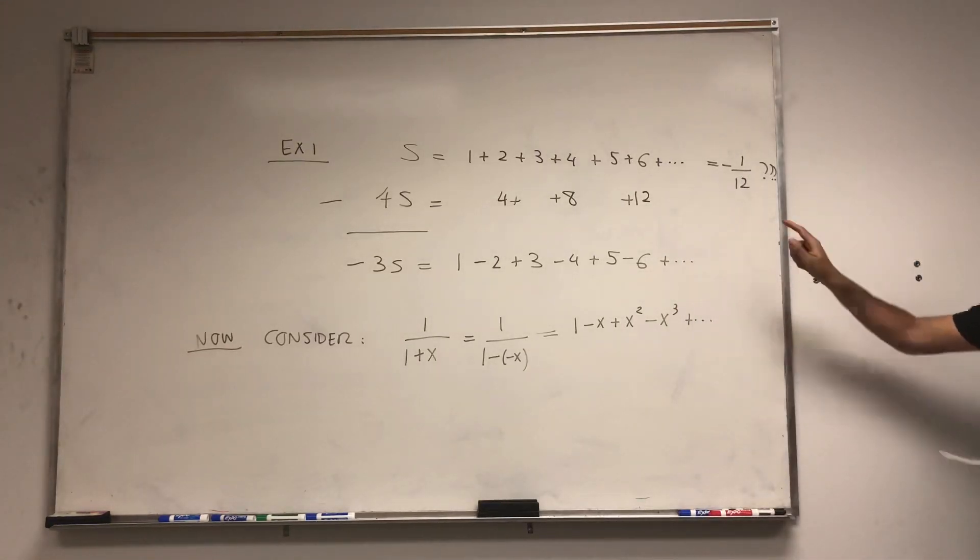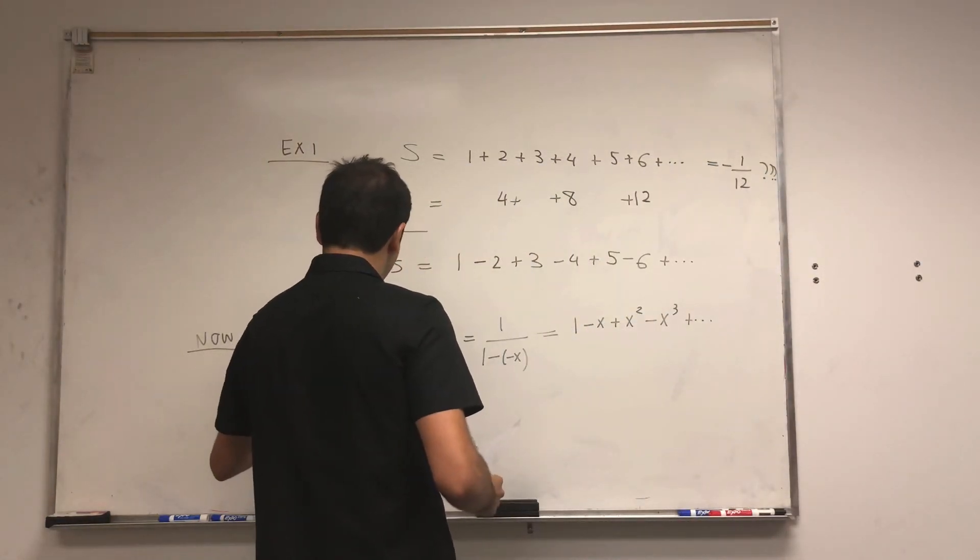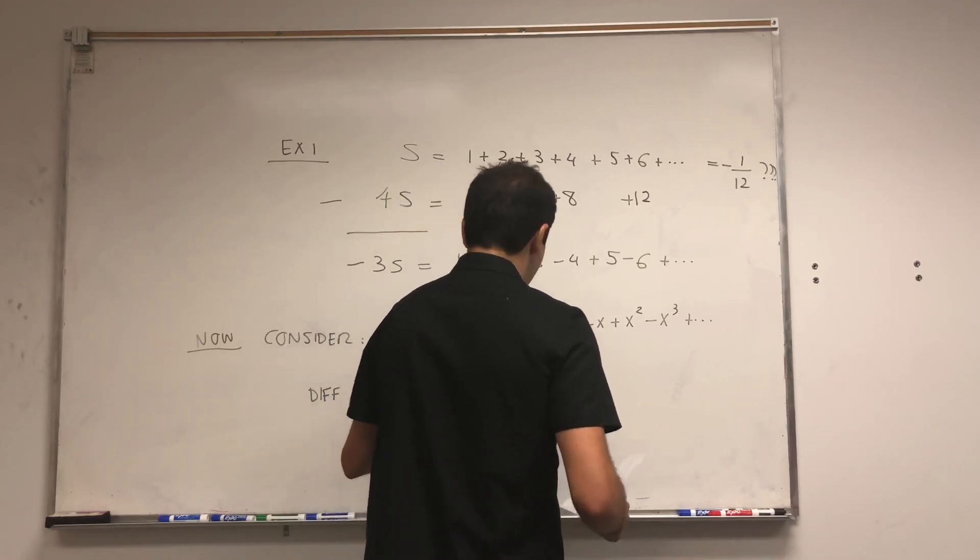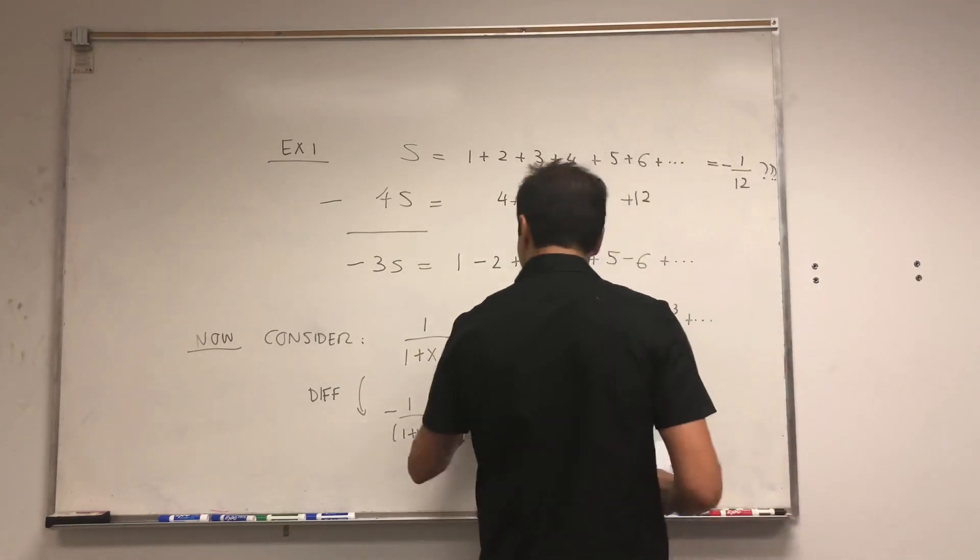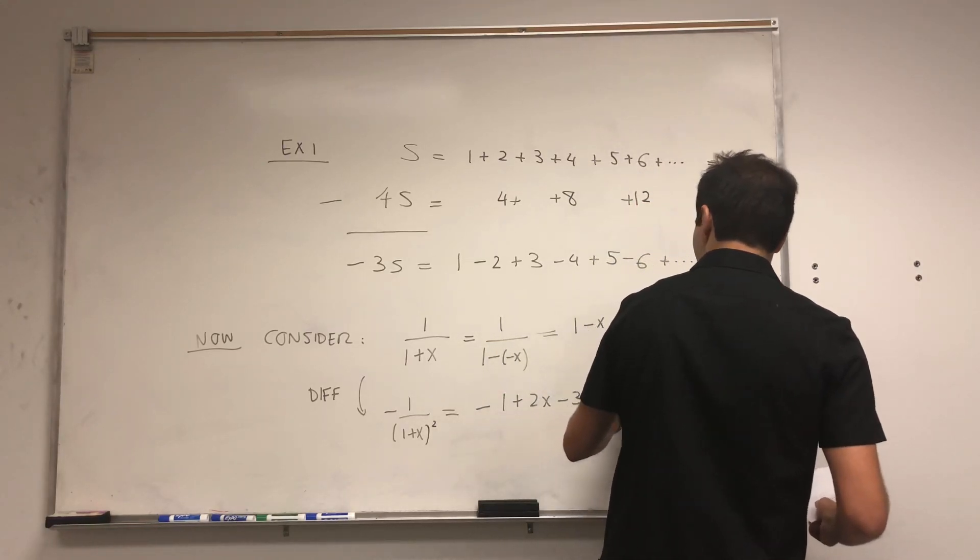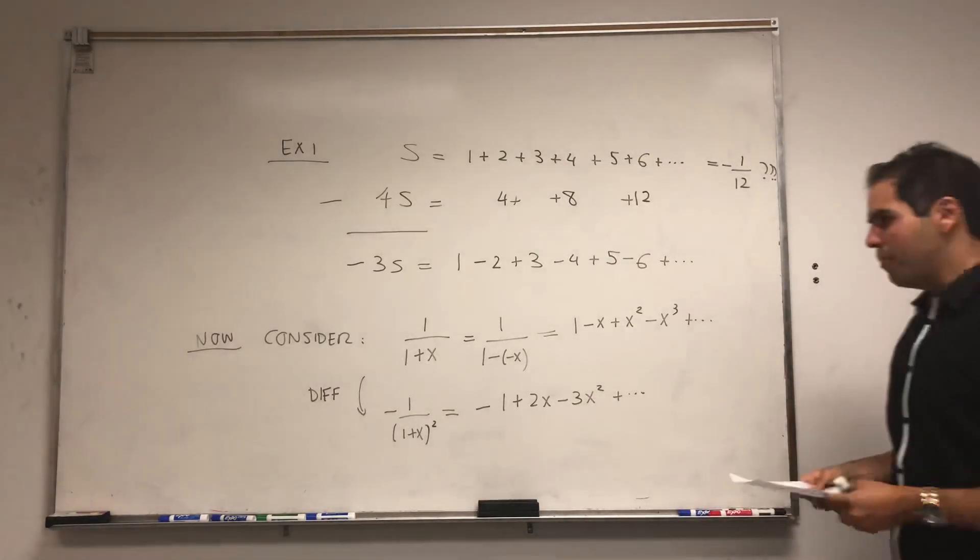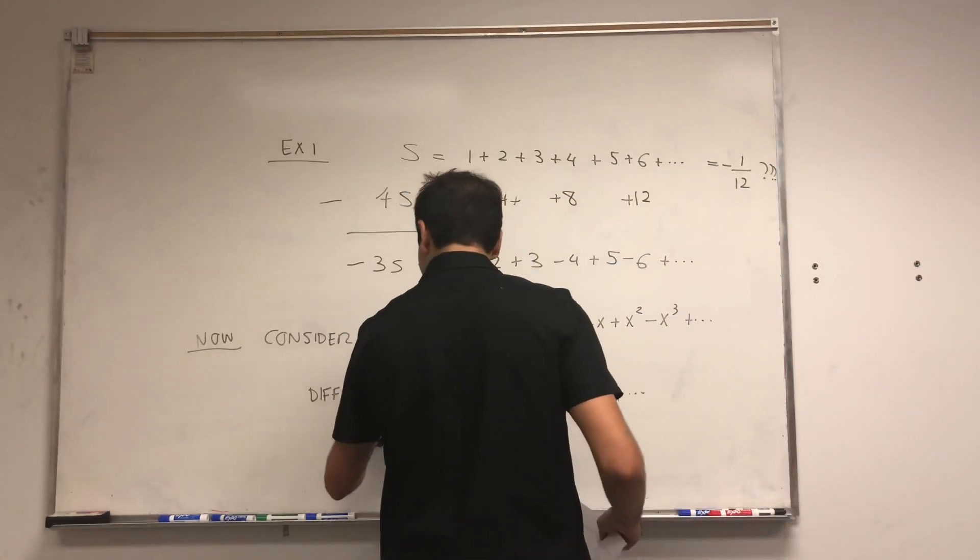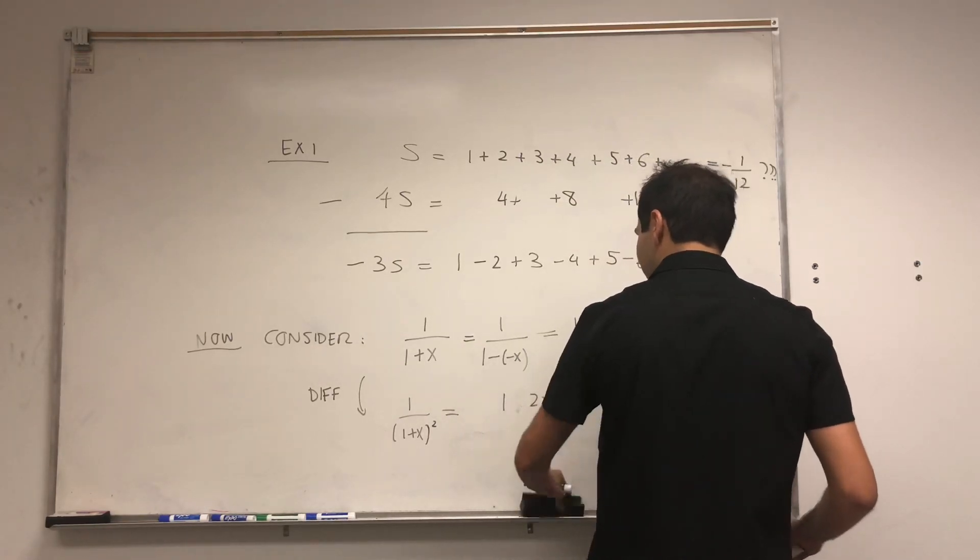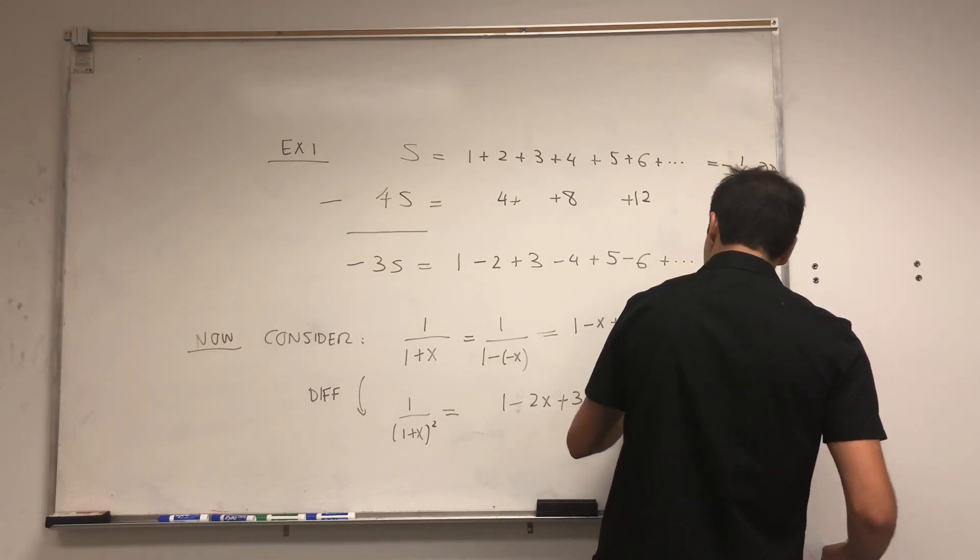Take that and again naively differentiate both sides. If you differentiate that, you get minus 1 over 1 plus x squared. On the other hand, if you differentiate term by term, you get minus minus 1 plus 2x minus 3x squared plus 4x cubed, etc. In particular, multiply both sides by minus 1 and you get 1 over 1 plus x squared is 1 minus 2x plus 3x squared minus 4x cubed, etc.